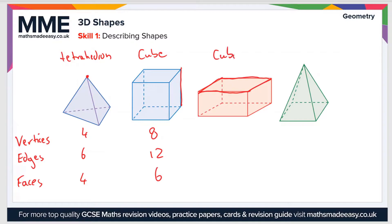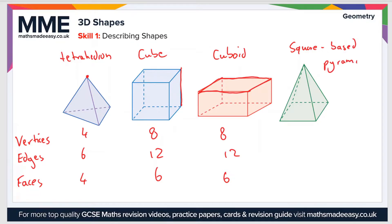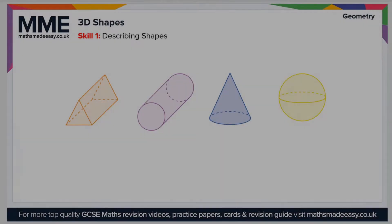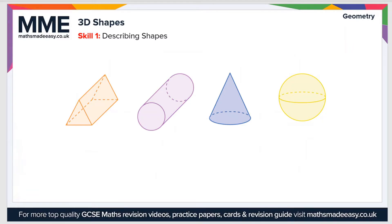Next we have a cuboid, which is the three-dimensional equivalent of a rectangle. Again there are 8 vertices, 12 edges, and 6 faces. Then this last one is a square-based pyramid, which has 5 vertices, 8 edges, and 5 faces.